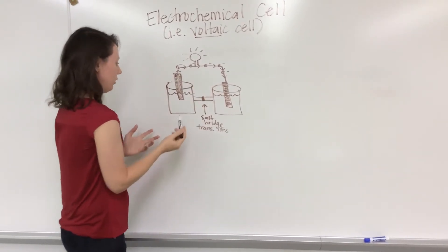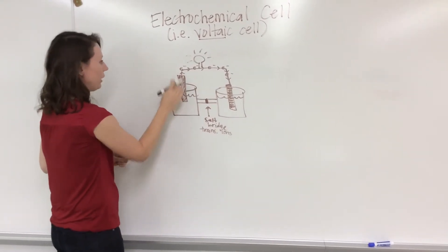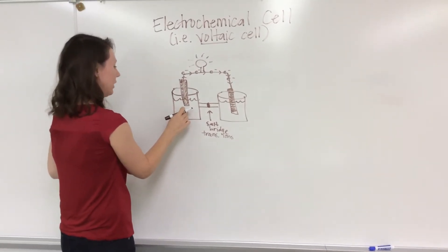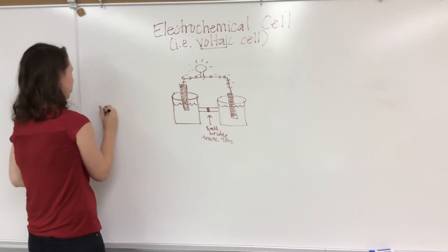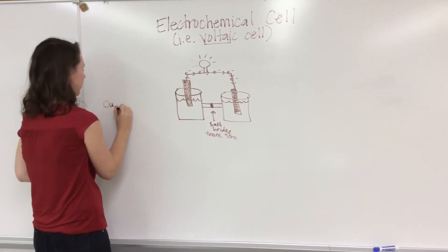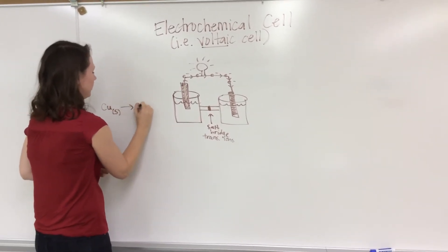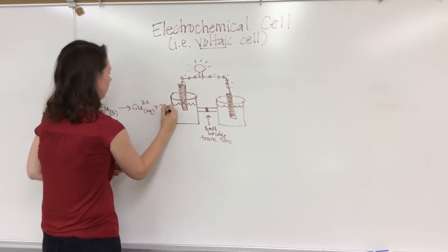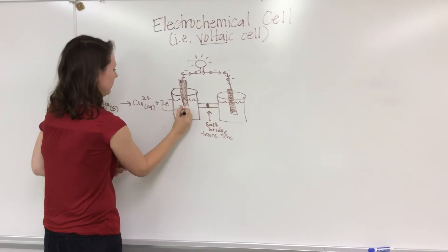Now we need to go through the chemistry of it. If we're going to be generating electrons, that needs to be an oxidation-reduction reaction that produces an electron. Let's just use, for instance, Cu solid going to Cu²⁺ aqueous plus 2e⁻. That process is occurring here.